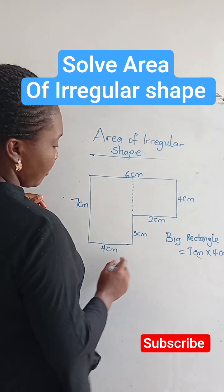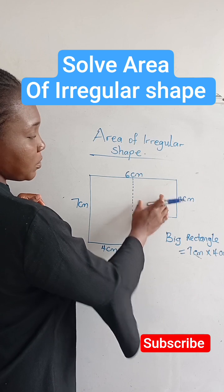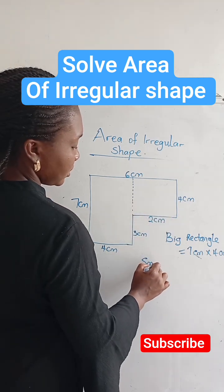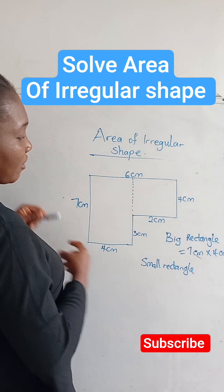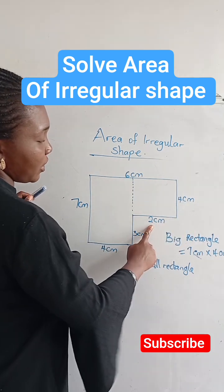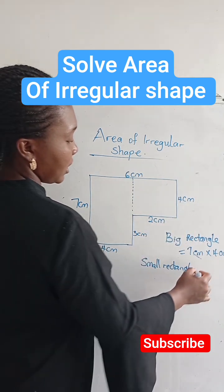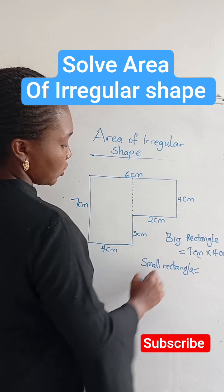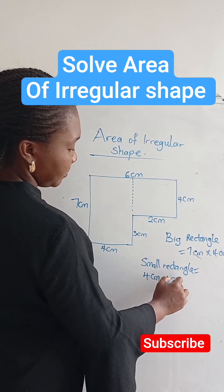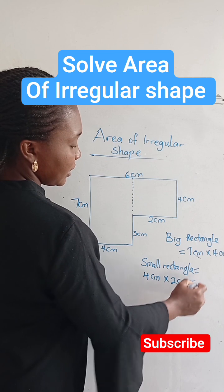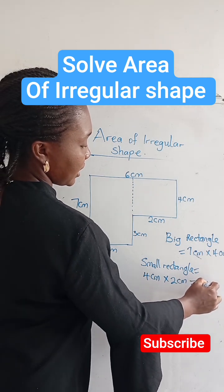And here we have the smaller rectangle. We have 4 centimeters and 2 centimeters. So we're going to multiply as well. 4 centimeters times 2 centimeters, that gives us 8 centimeters squared.